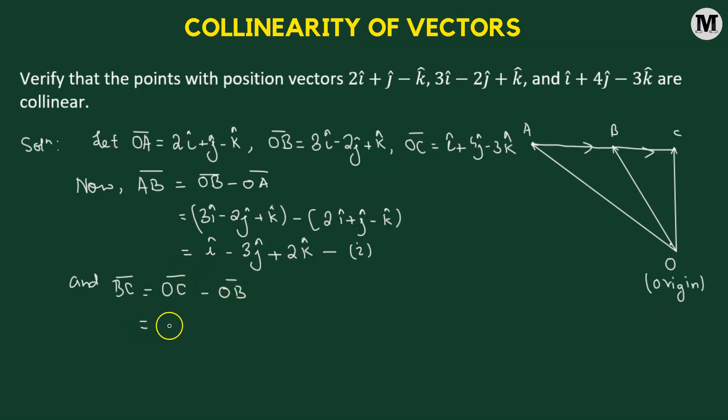The vector BC in terms of the position vector is OC vector minus OB vector. Now, what is OC vector? OC vector that's given by i cap plus 4j cap minus 3k cap. And from here, we're going to subtract OB vector. The OB vector will be 3i cap minus 2j cap plus k cap.